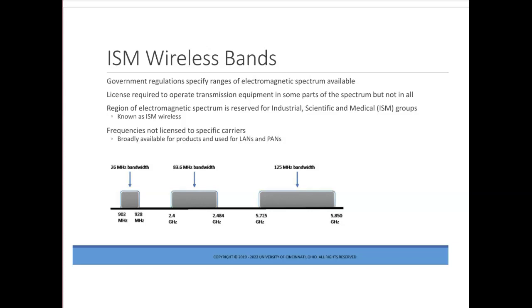Another characteristic of wireless is the frequency used by the technologies. Government regulations have specific ranges of the electromagnetic spectrum available for communication. A license is required to operate transmission equipment in some parts of the spectrum, while other parts are unlicensed. There is a region of the electromagnetic spectrum reserved for use by industrial, scientific, and medical groups, commonly referred to as ISM wireless. These frequencies are not licensed to specific carriers and are broadly available for products used in LANs and PANs.